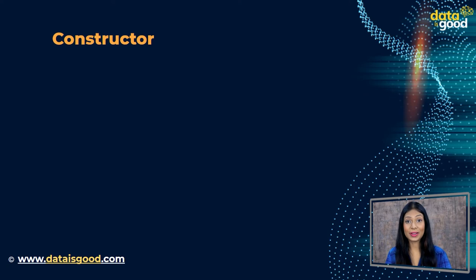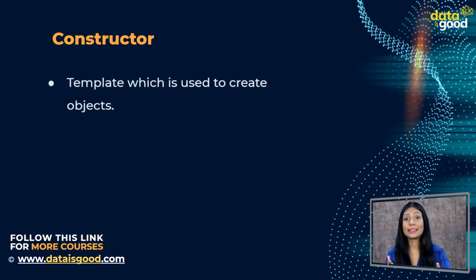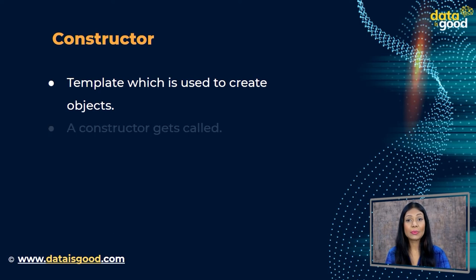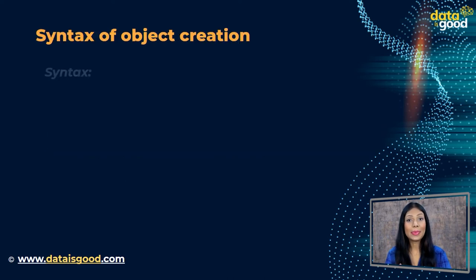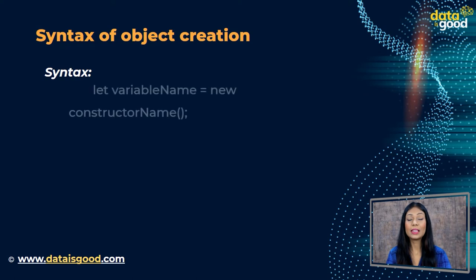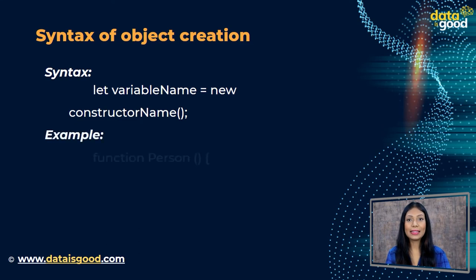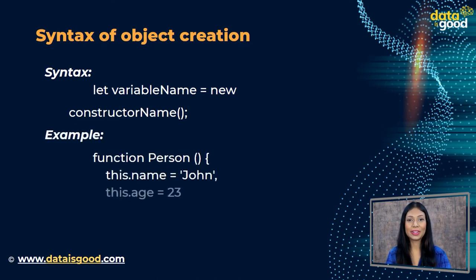So what is a constructor? A constructor is a template which is used to create objects. In JavaScript, a constructor gets called when you declare an object using the 'new' keyword. The basic syntax to create an object of the constructor is: let variableName = new ConstructorName. Here is an example on your screen showing the overall flow of the constructor.